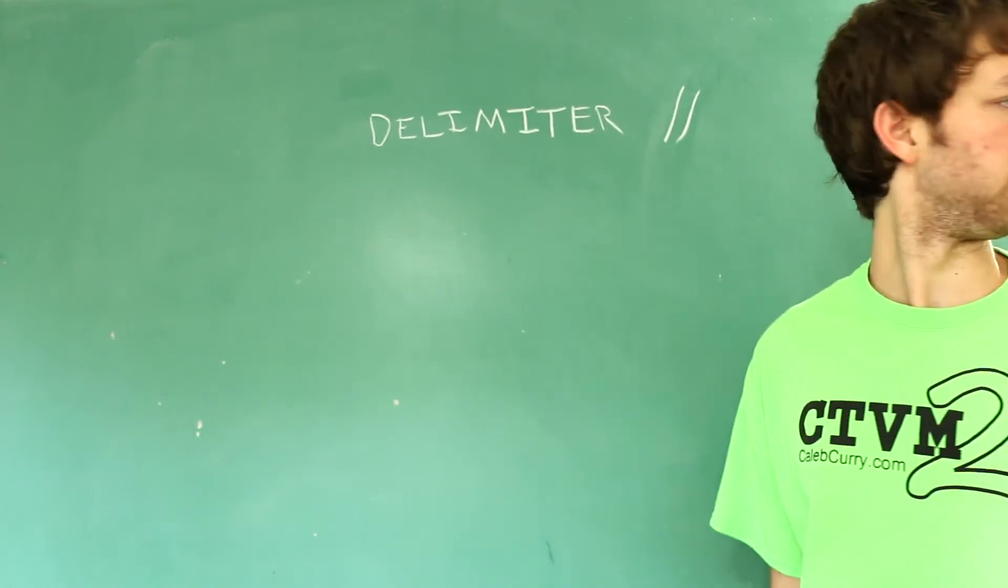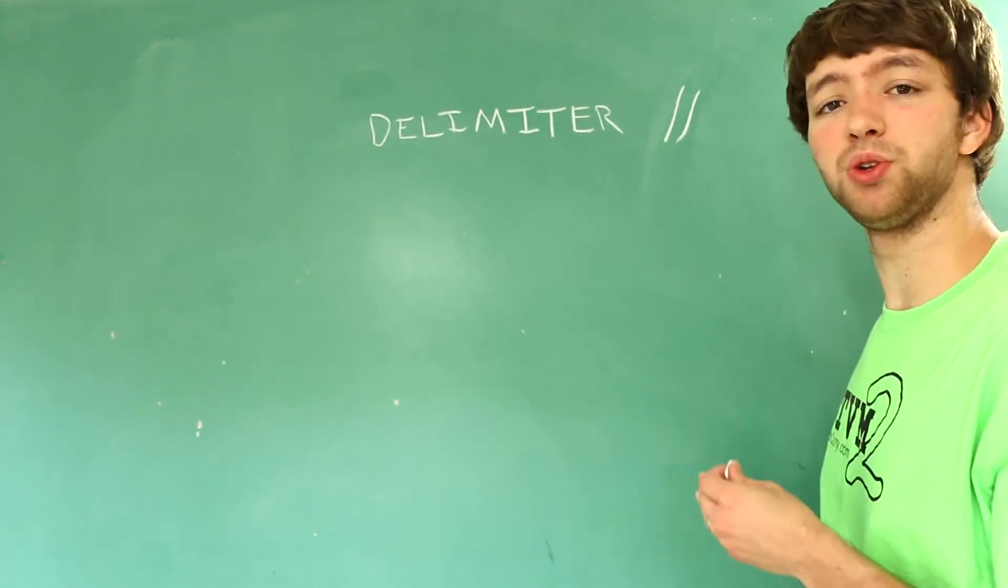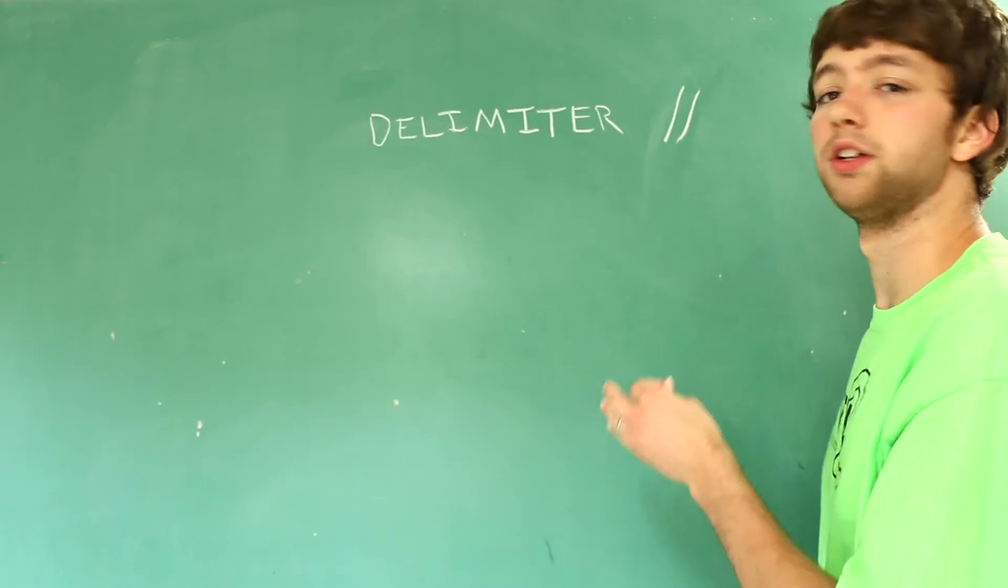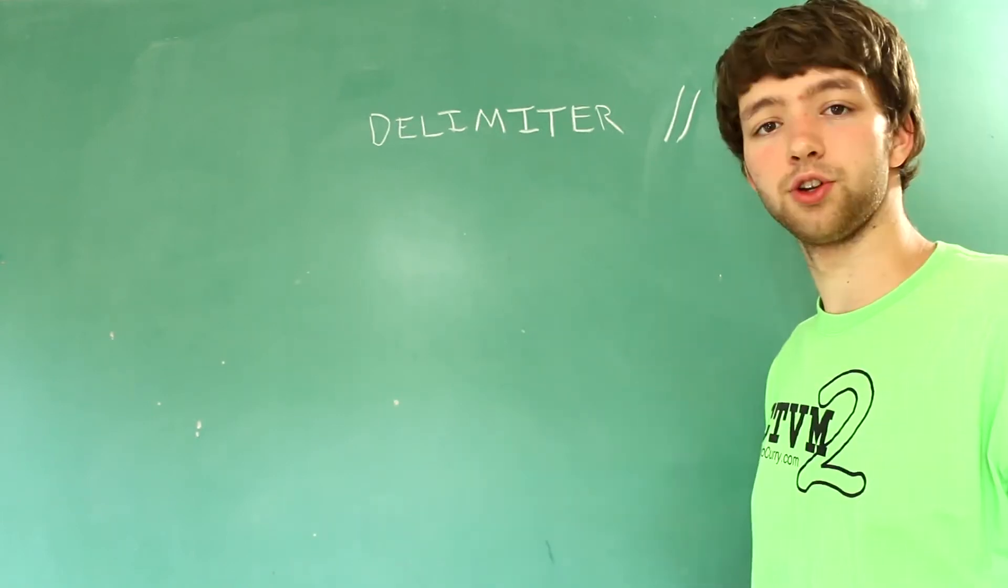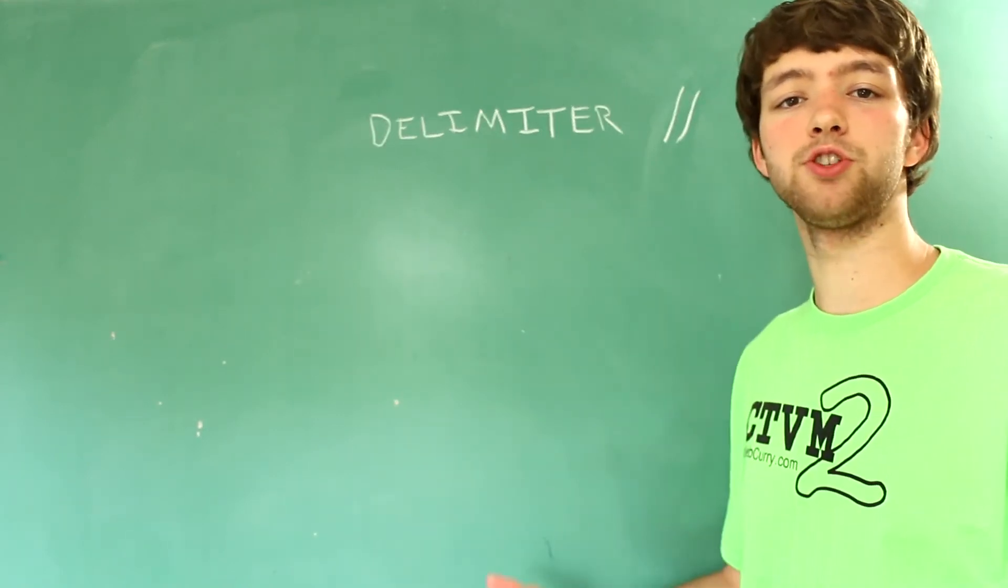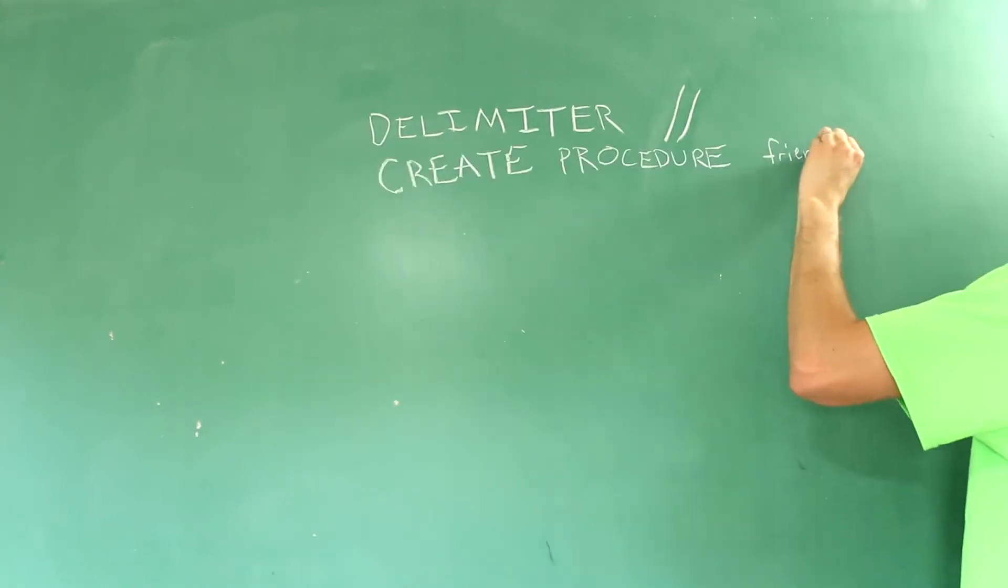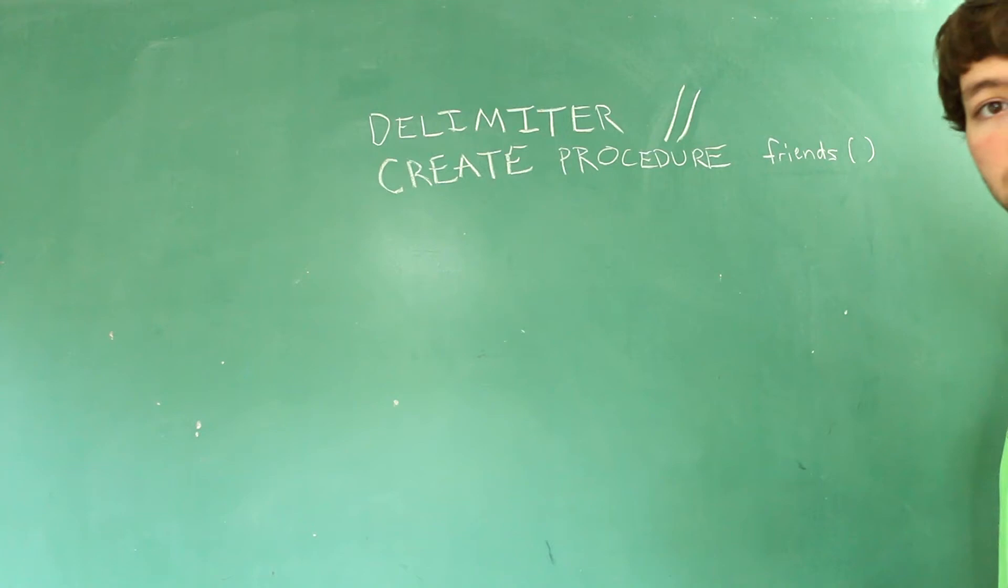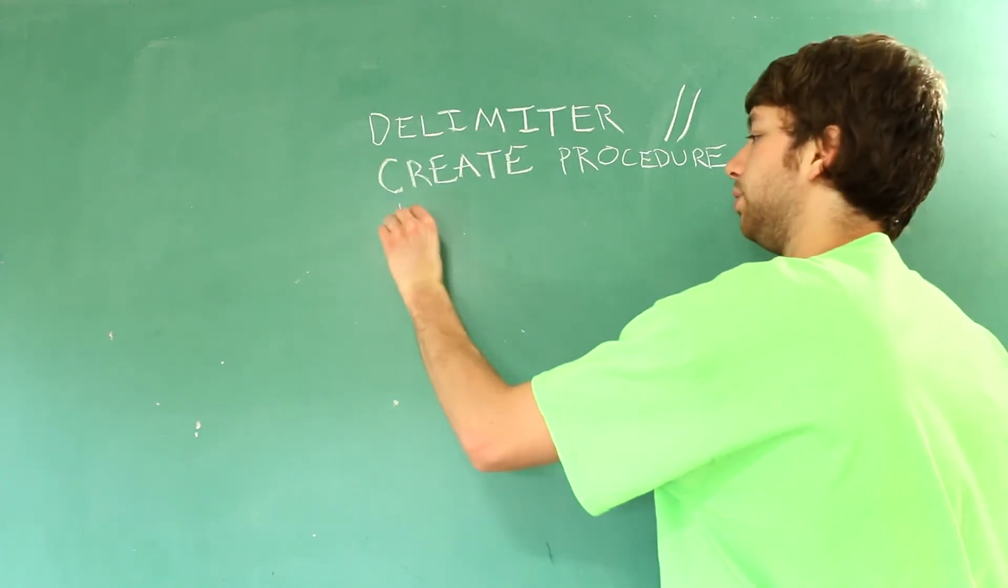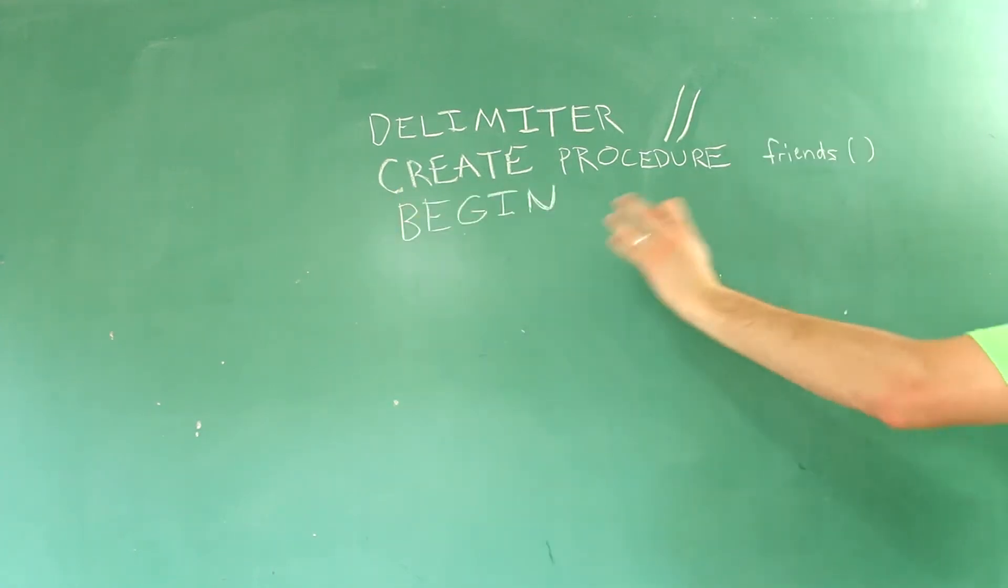But before you do that, you're going to want to start your procedure. So to do that you use the create procedure command. And then you give it a name. And then you just put parentheses. So this is where later you will give it parameters. But for now we'll just keep it at that. And then you say begin. That is how you start the definition of a stored procedure.